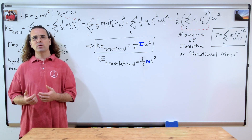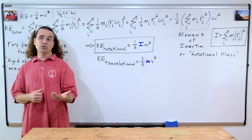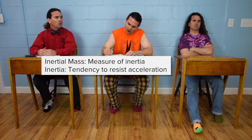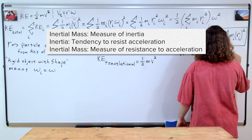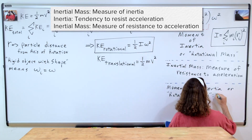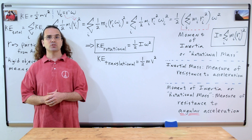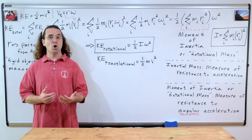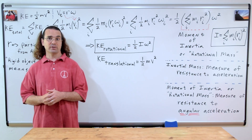In order to understand what I mean when I say moment of inertia is rotational mass, Bo, remind me, what is inertial mass? Inertial mass is a measure of inertia — a tendency to resist acceleration. So inertial mass is the measure of an object's resistance to acceleration. Correct. Inertial mass is a measure of the tendency of an object to resist acceleration. The more mass something has, the more it resists acceleration. This means that moment of inertia, or rotational mass, is a measure of the tendency of an object to resist angular acceleration. The more moment of inertia or rotational mass something has, the more it resists angular acceleration.